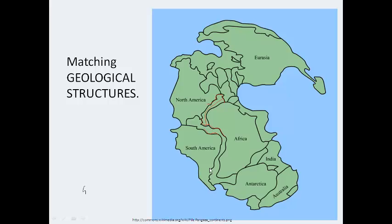Another thing Wegener noticed was matching geological structures. He found that rocks in Newfoundland are the same types as those found in Greenland, Norway, and Scotland. During Pangaea, these continents were all lined up with one another forming one large landmass, but after they spread apart, they took their geological features with them.